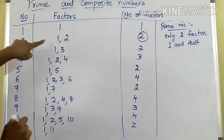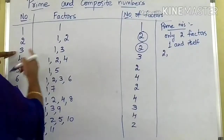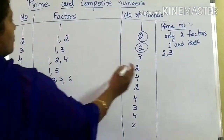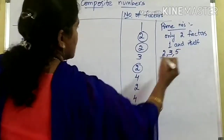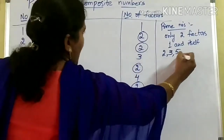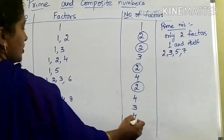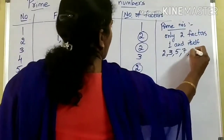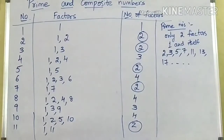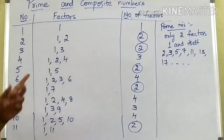We will observe in the table how many numbers are having two factors. One is having one factor, so it is not a prime number. Two is having two factors, so two is a prime number. Three is having two factors, so three is a prime number. Four is having three factors, so it is not a prime number. Five is having two factors, so five is a prime number. Six has four factors. Seven is having two factors, so seven is a prime number. Eight has four factors, nine has three, ten has four, eleven has two factors — so eleven is a prime number. Next prime numbers are 13, 17, and so on. All these numbers are having only two factors, that is one and itself.